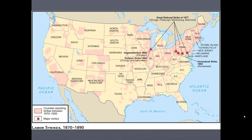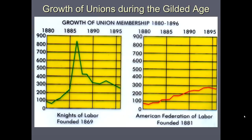Here you can see where major strikes occurred — notice it's up in the Ohio River Valley along the Great Lakes, where a lot of those industries thrived. And here you can see the growth of unions over time.